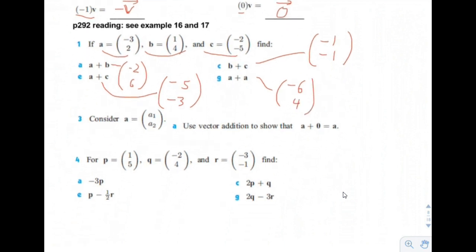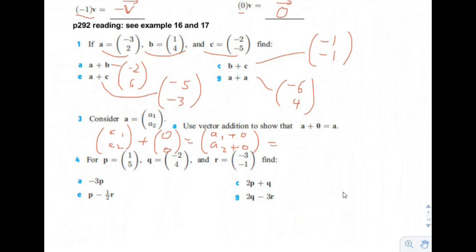Number 3: consider vector a equals (a1, a2). Use vector addition to show that vector a plus the zero vector equals vector a. We take (a1, a2) and add the zero vector (0, 0), then add the components individually. This may seem absurdly obvious, but you get the a vector back — many proofs are like that.